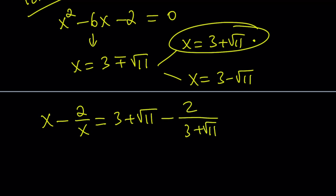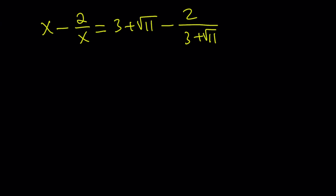You can rationalize the denominator, but let's go ahead and make a common denominator. Put a 1 underneath. Multiply 3 plus root 11 by 3 plus root 11.